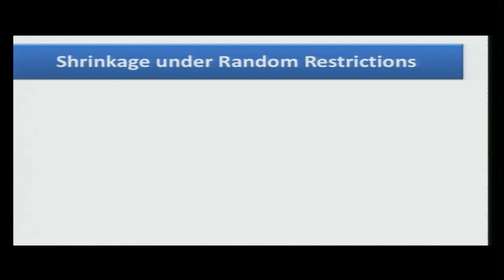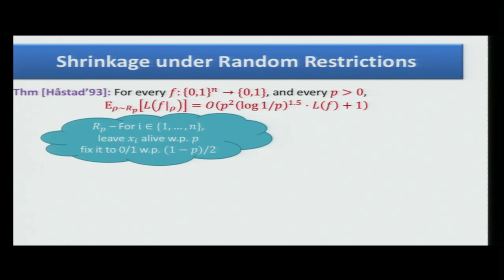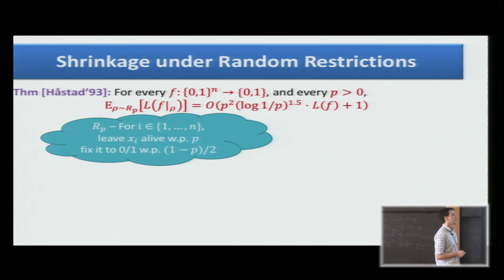Let's get into more details about the shrinkage part. Håstad showed the following: give me any function, Boolean function, and any parameter p. We need to define some distribution of random restriction. For every variable independently, we leave it alive with probability p. We don't do nothing on it. With probability 1 minus p over 2, we fix it to 0. With 1 minus p over 2, fix it to 1. This is rho p. Then we look at the formula size of the function under the restriction. The expected size shrinks by a factor of p squared log 1 over p to the 1.5 times the original size.